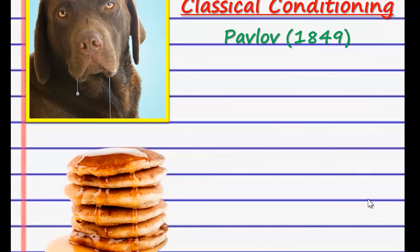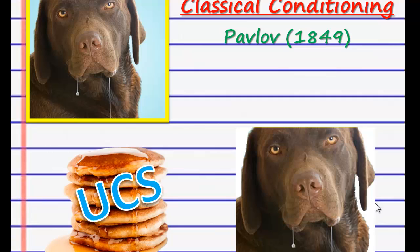He decided that the food would be the unconditioned stimulus — it's sort of an instinct. By instinct, the dogs would see the food and they would start to salivate, so that's the unconditioned stimulus. The salivation in the dog — the dribbling — is known as the unconditioned response. The dog cannot help it: it sees food, it starts to salivate. That's the unconditioned response — the dog's response to the food.